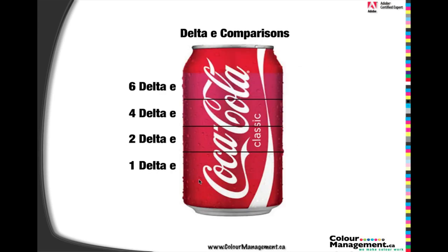Here's a visual to show how this works. One section here represents a one delta E difference — and even on screen, you can't really see a difference. As you start to move up, you see there's obviously a much bigger color difference. A six delta E is certainly very, very noticeable. So that helps you understand delta E, because people use and throw it around a lot, and understanding it is very important.